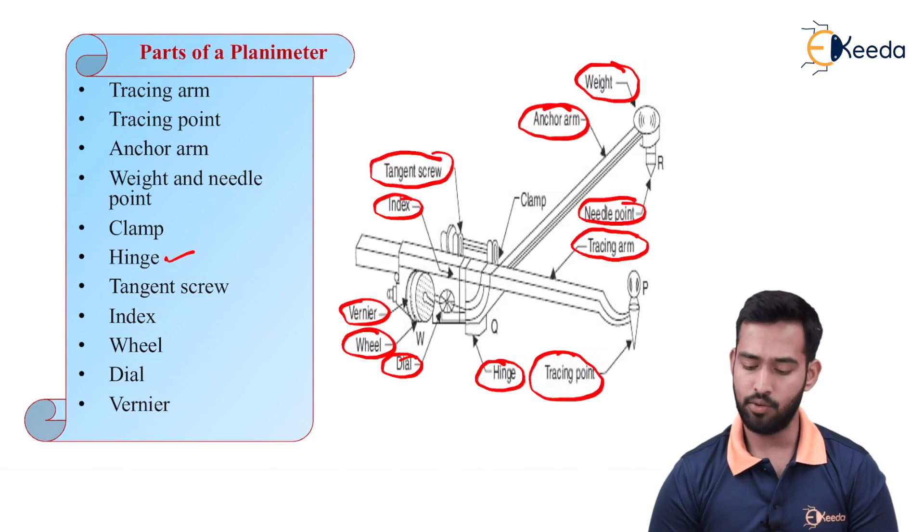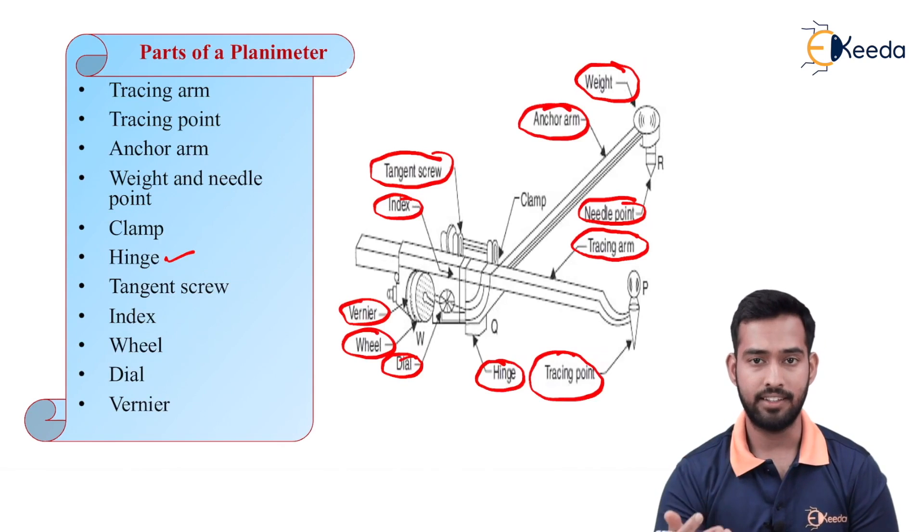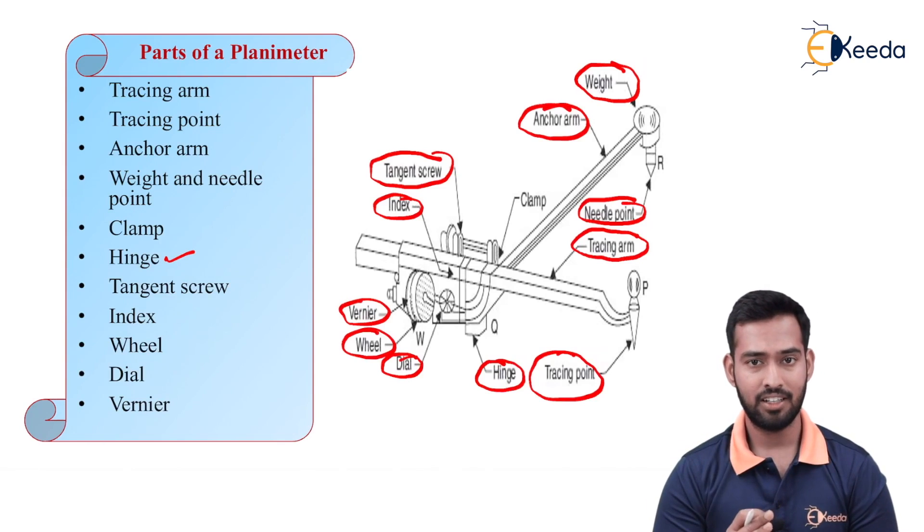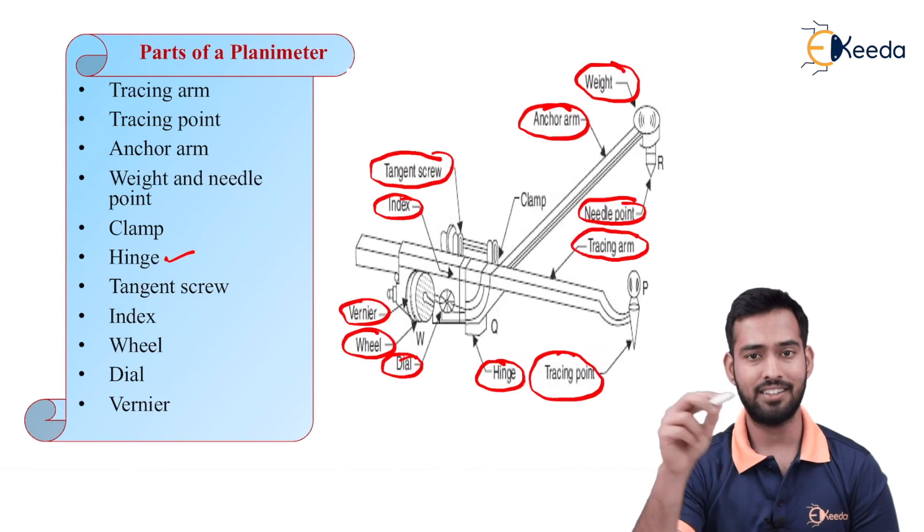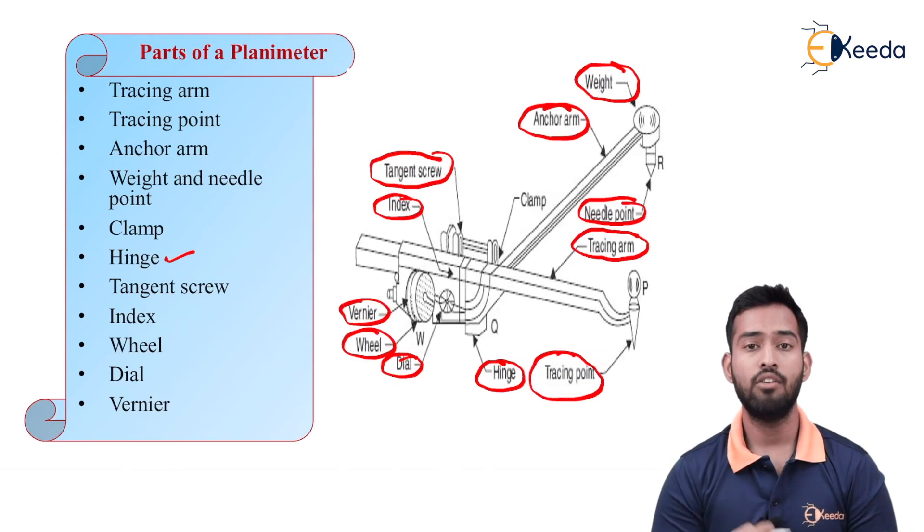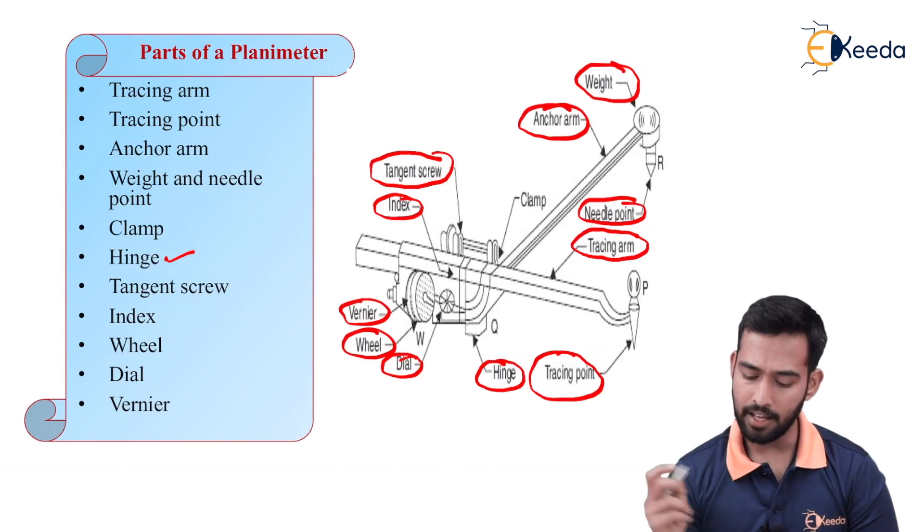So while calculating, we have to use the initial reading and final reading. So by using dial, vernier and index point, we have to calculate the initial reading. After that, we have to start the tracing and at the end, we have to again take the reading which will be your final reading.